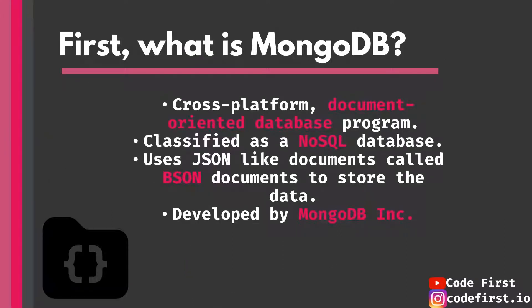So what is MongoDB in technical terms? It is a cross-platform document-oriented database. It stores data not in tables like relational databases, but in the form of documents, which are BSON documents — an extended version of JSON. It was developed by MongoDB Incorporated and is classified as a NoSQL database. NoSQL databases do not store data in tables; they store both structured and unstructured data.